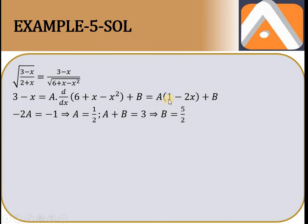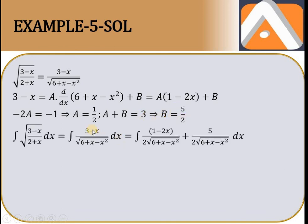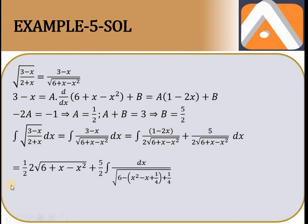Ab (3 - x) ko A into (6 + x - x²) ka derivative plus B likhte hain. Derivative hai (1 - 2x). Compare karo: -2A = -1 toh A = 1/2. Constant mein 3A + B = 3: 3(1/2) + B = 3, toh B = 3/2. Toh numerator: (1/2)(1 - 2x) + 3/2 set kar diya. Minus common liya aur completing square karo: x² - x form mein, (x - 1/2)² subtract karo.